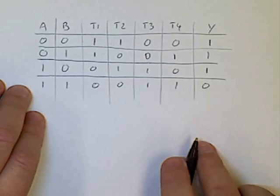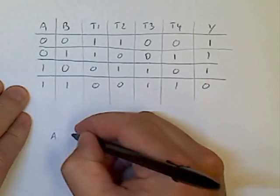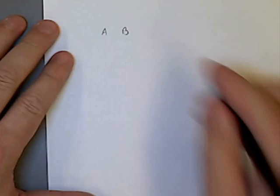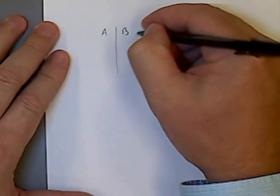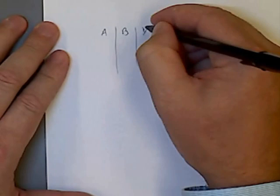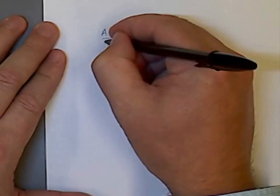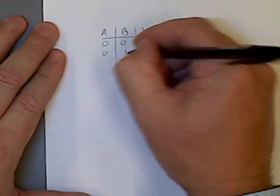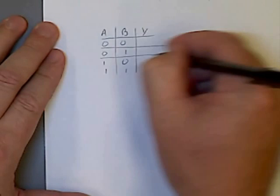Now to condense this, I can call my input A, B, and my output, I'm going to call it Y in this case, but it can be called anything. 0, 0, 0, 1, 1, 0, 1, 1.